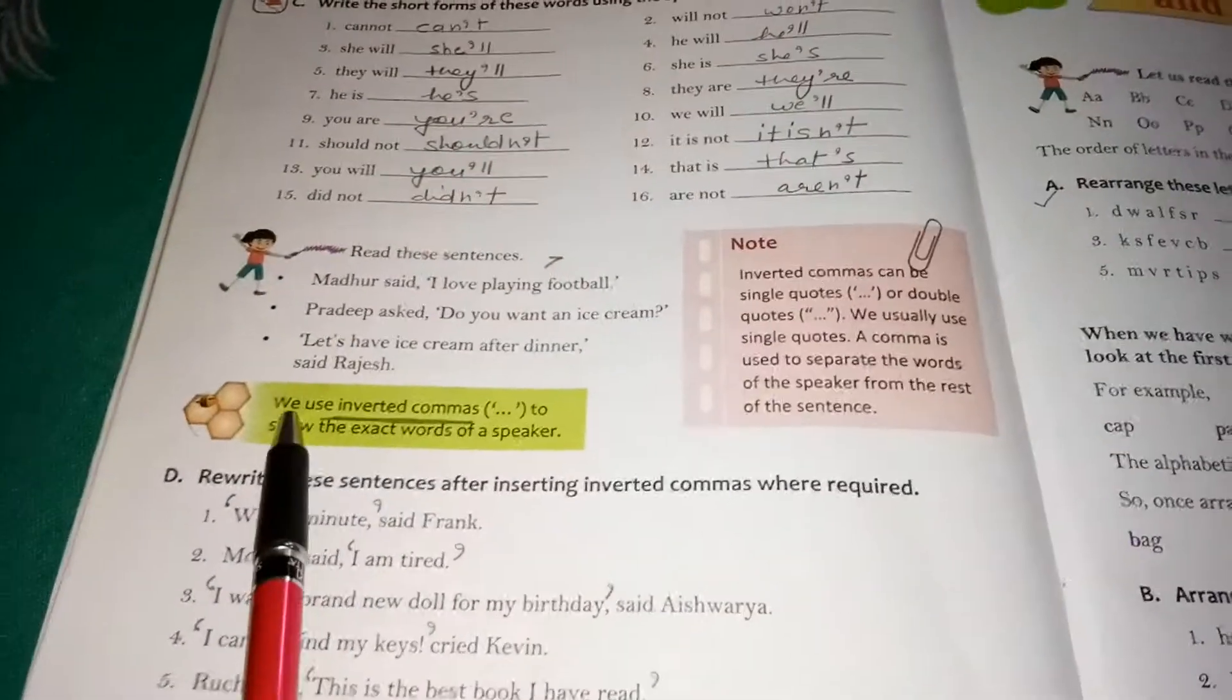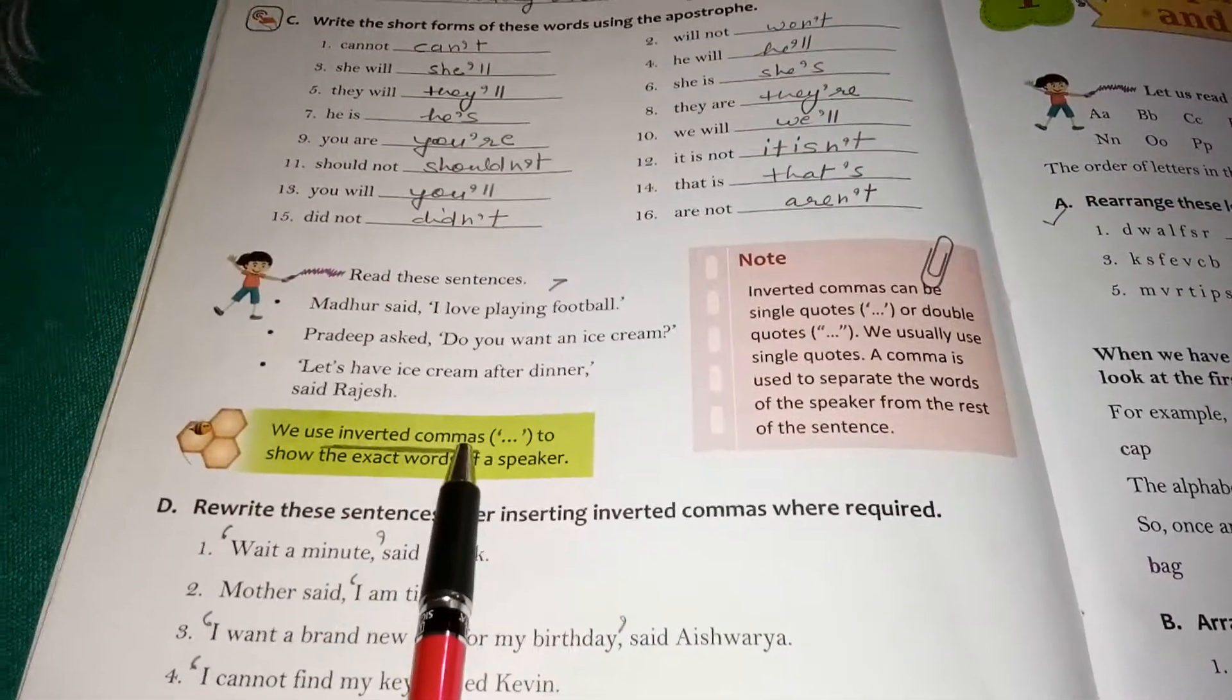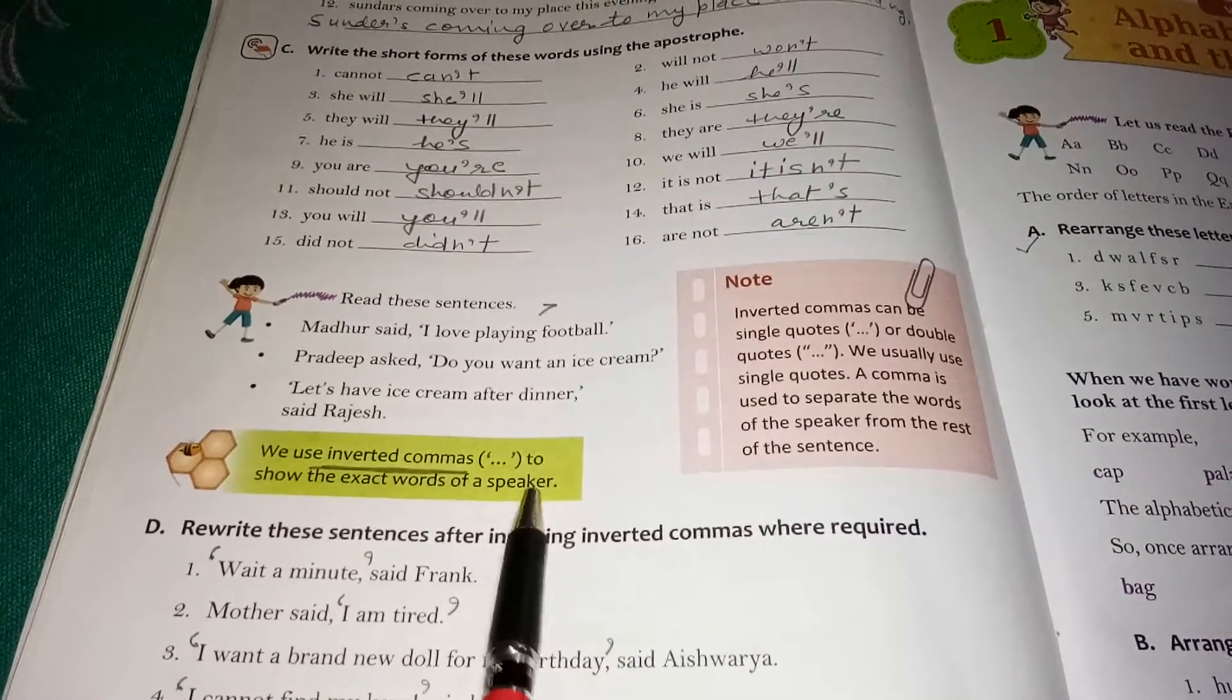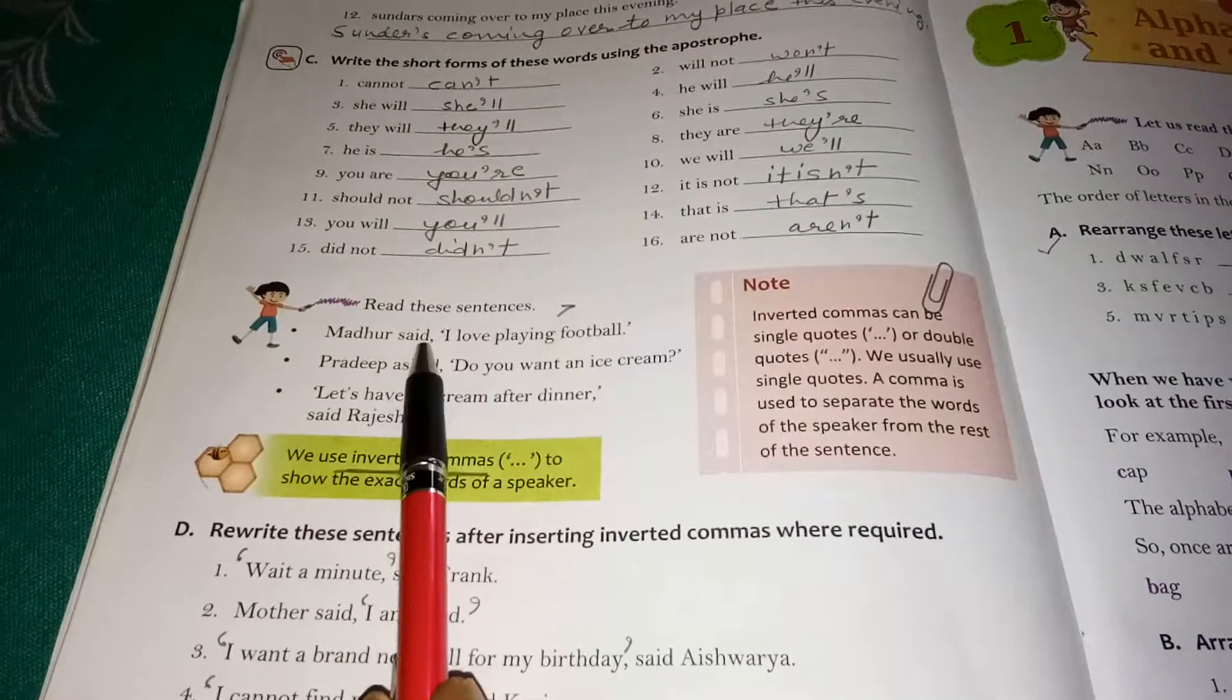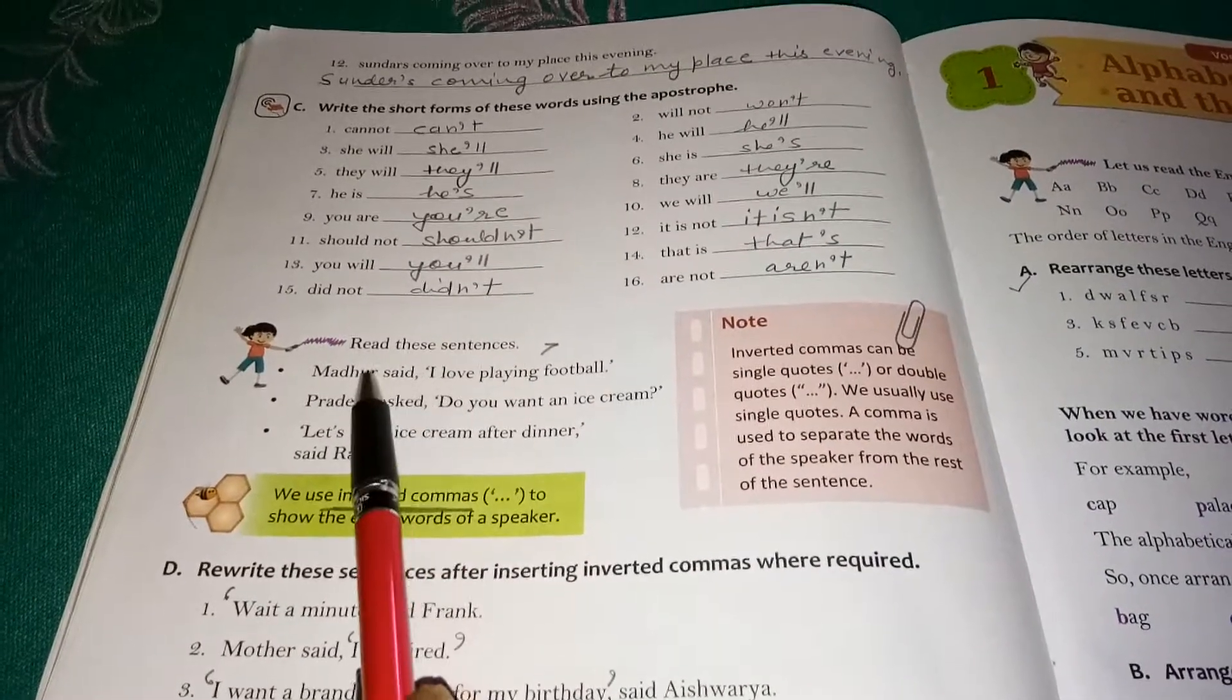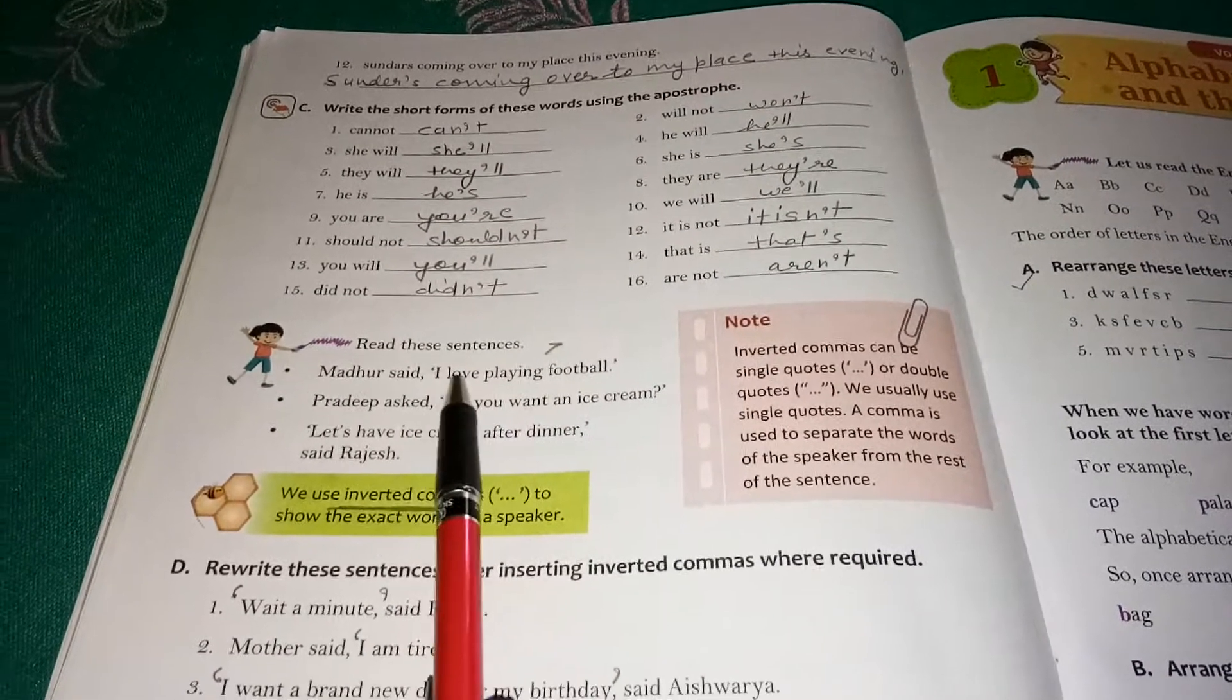The next punctuation mark is inverted comma. We use inverted commas to show the exact words of a speaker. Madhur said, "I love playing football." Whose dialogue is this? Madhur is saying something. That is why it is written in inverted comma or quotation mark.